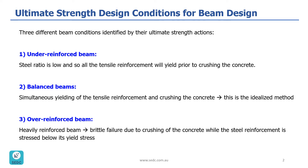In this case, the beam will behave in a ductile manner. The reason for that is once the steel has yielded, it continues to elongate rapidly. Since this occurs before crushing of the concrete and hence beam failure, beam deflection can be observed while the beam is still able to carry the applied load. The exaggerated beam deflection gives warning of impending failure and the ductile behavior allows a redistribution of moments in indeterminate structures. We can also see similar plastic behavior in steel structures.